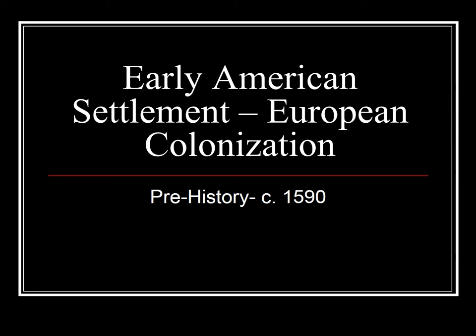A lot of American history courses begin with 1607 and the establishment of the Jamestown Colony, but I like to go back earlier than that and look at the American continent prior to European settlement. The misnomer that often happens is that this was a land open for Europeans to take, that there were no significant cultures here, and that's simply not true. This first lecture covers early American settlement through European colonization, prehistory to about 1590. That little 'c' is called a circa, meaning approximately or about.